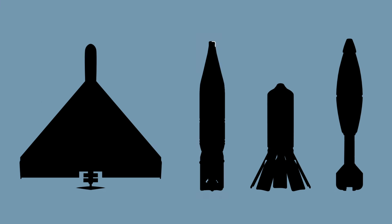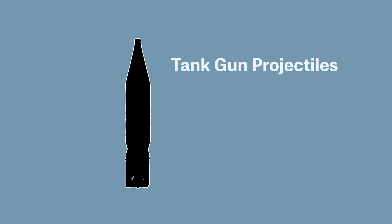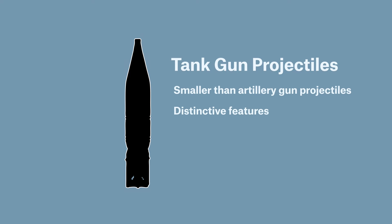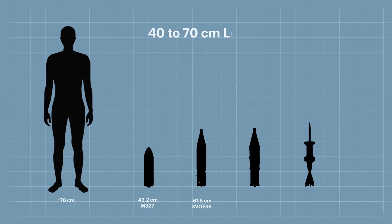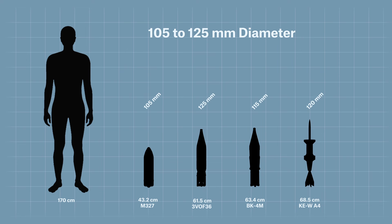Tank gun projectiles often appear visually similar to artillery gun projectiles, though they are typically smaller and often feature distinguishable physical characteristics, such as darts or fins. Common tank gun projectiles range from 40 to 70 centimetres in length, and 105 to 125 millimetres in nominal diameter.